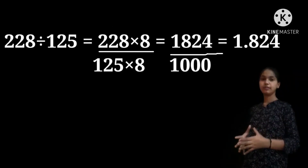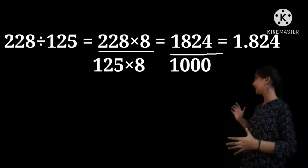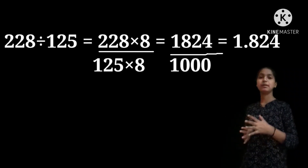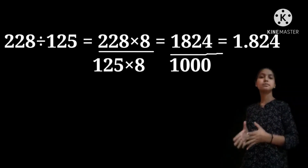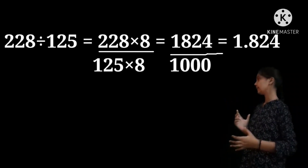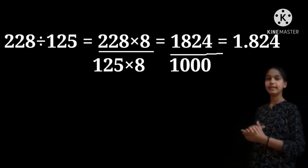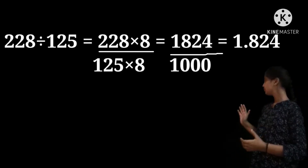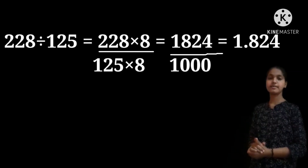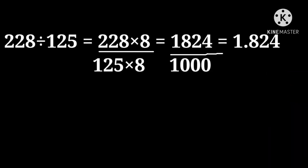Let us see dividing any number by 125. Just look at the examples here. 228 divided by 125 — we should multiply 8 to the numerator and denominator. So 228 into 8, divided by 125 into 8. Let us multiply: 228 into 8 is 1824, and 125 into 8 is 1000. Let us divide this. The answer is 1.824. It's very simple — in 1000 we have only 3 zeros, and in the numerator we have 1824. We should keep 3 digits before the decimal point. The answer is 1.824.